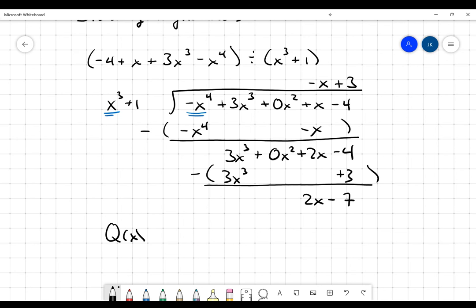So my quotient is going to be the expression negative x plus 3. And my remainder is going to be this expression 2x minus 7. Now, it is possible to keep going, but that is not the expectation in this specific course.